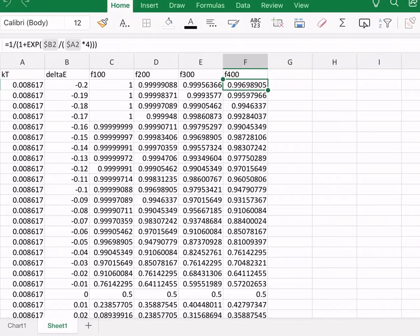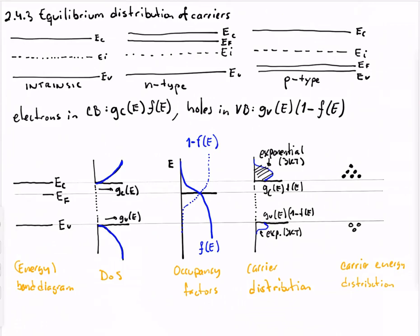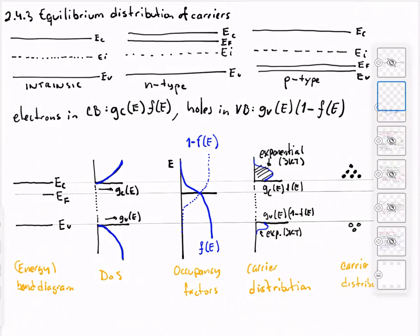What we have here is, again, the Fermi function. Let's go back here. Let me remind you that the Fermi function is equal to 1 over 1 plus E to the (E minus EF) over KT, right?